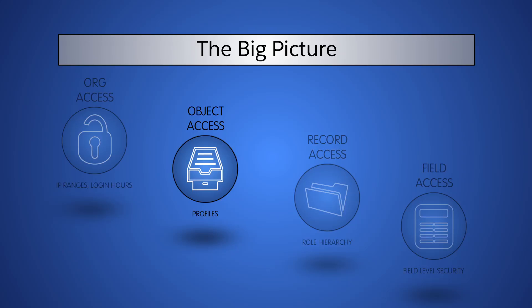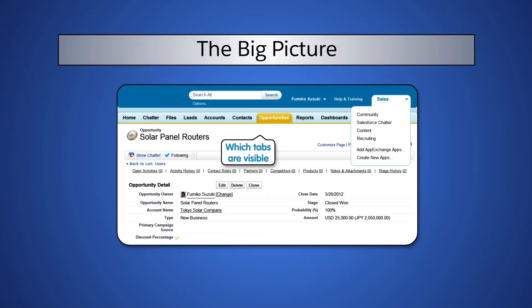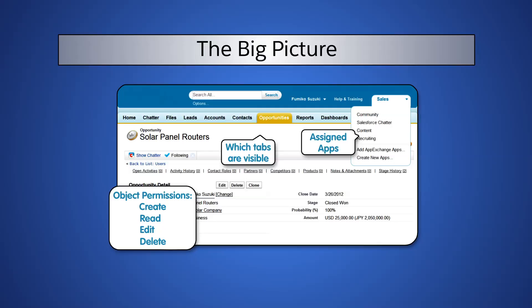Profiles determine the objects a user can access and the permissions a user has on an object record. Profiles also control which tabs are visible and which apps are available in the App Picker. Profiles also determine object access and what permissions users have to each object: create, read, edit, and delete.